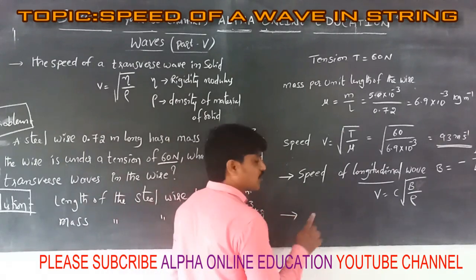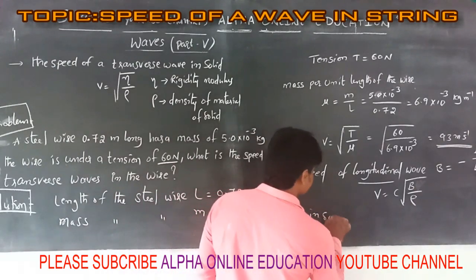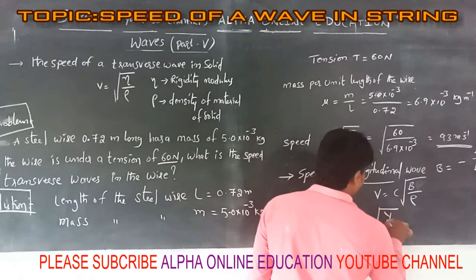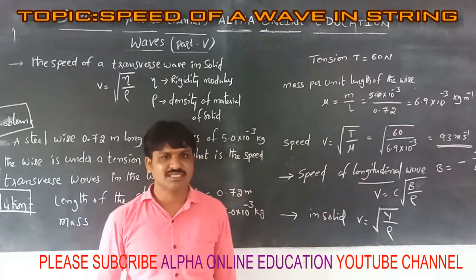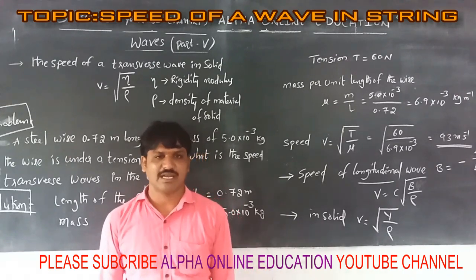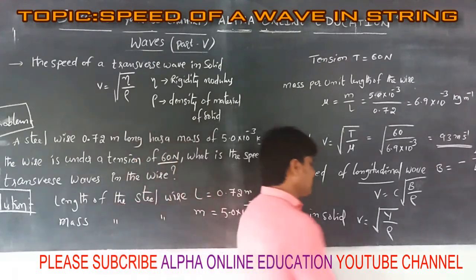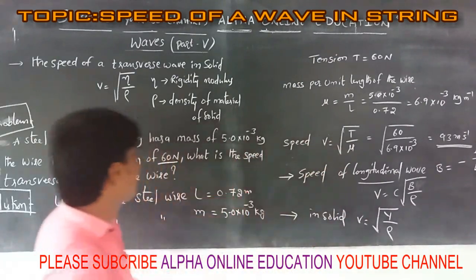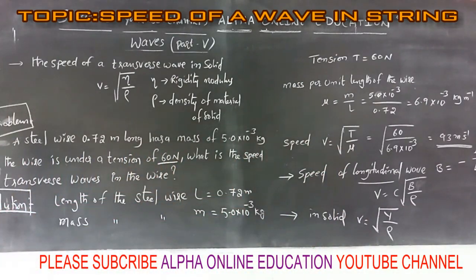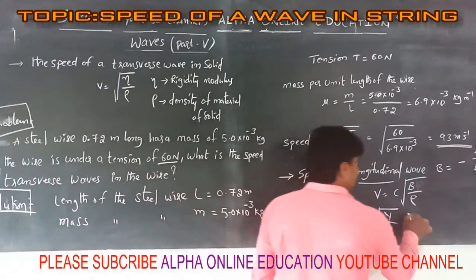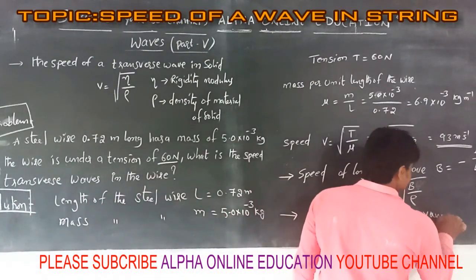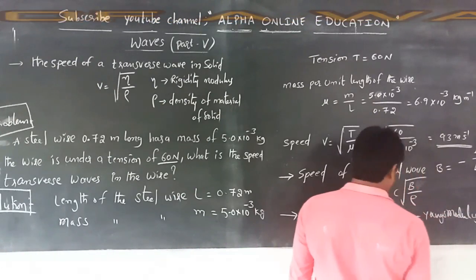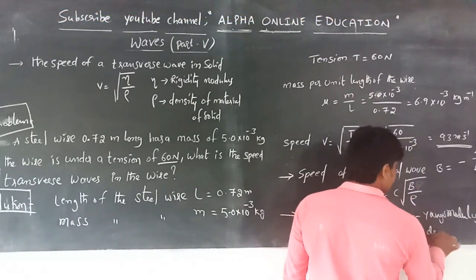For longitudinal waves in a solid, the formula is V equals root of Y divided by rho, where Y is Young's modulus and rho is the density of the material. Rho is the density of the material of the solid.